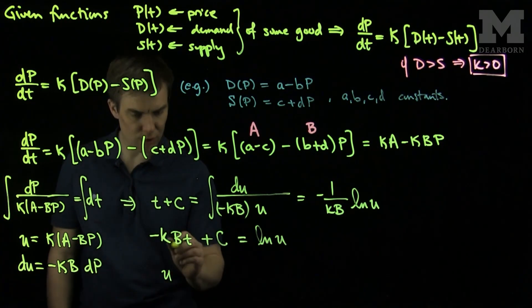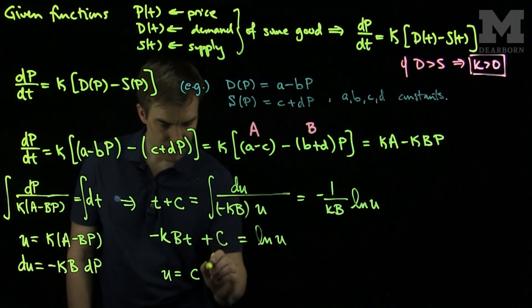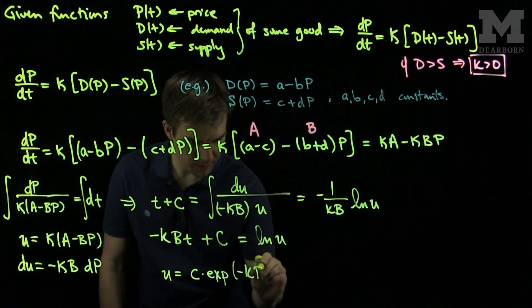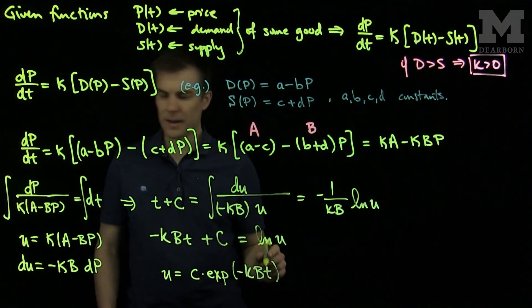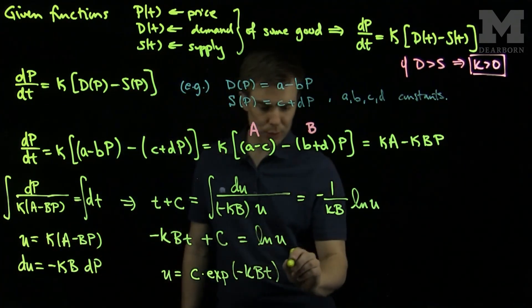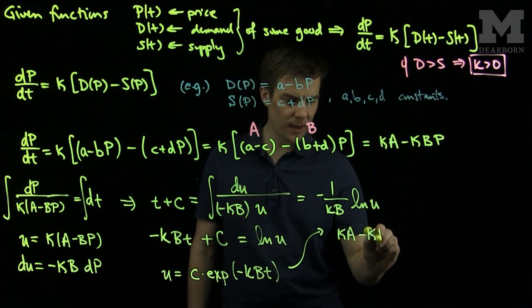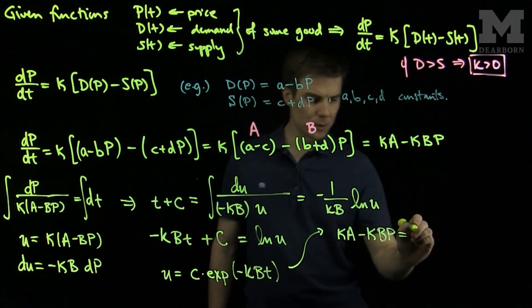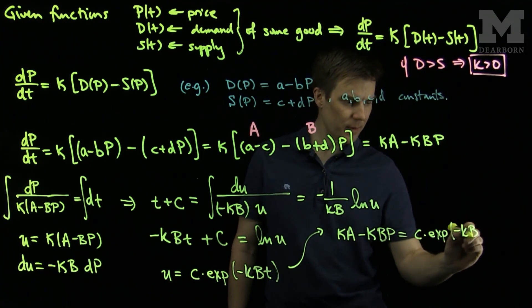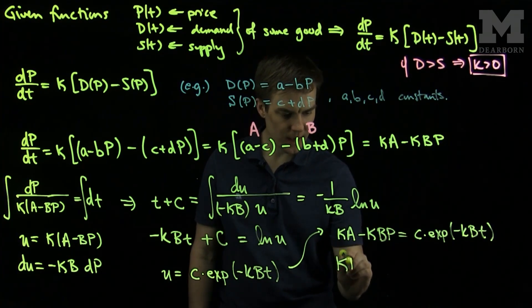Which tells me that u will be a constant c times the exponential of negative KB times t. And now the last step to solve for p is to note that u is KA minus KBp. So this will tell me that KA minus KBp is equal to c times the exponential of negative KBt.